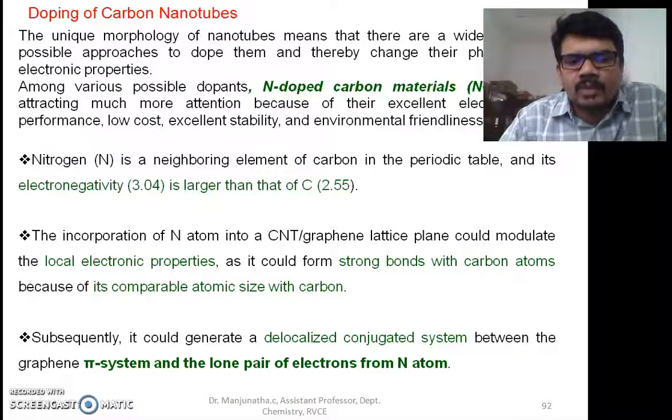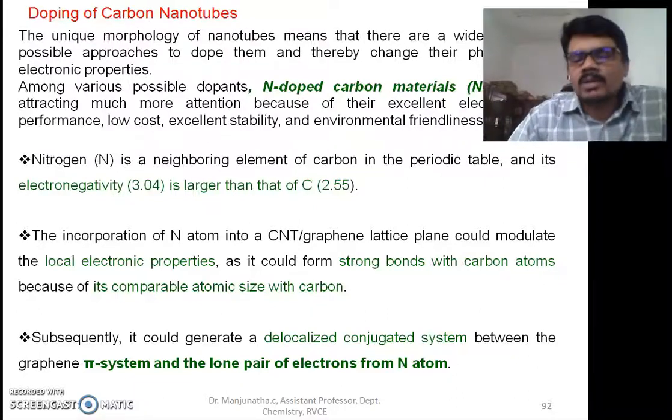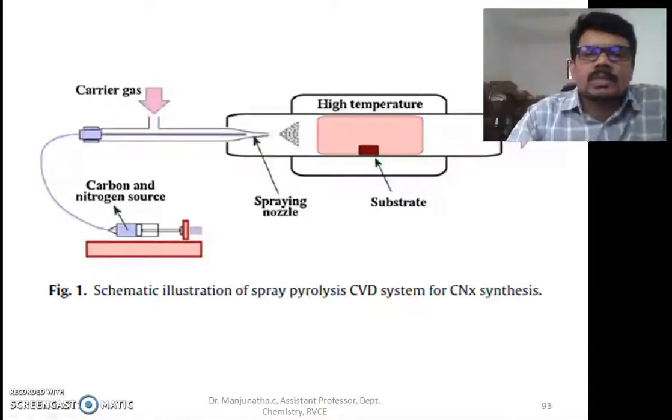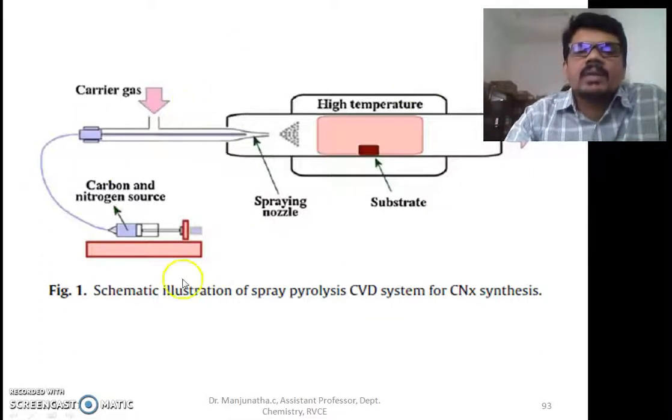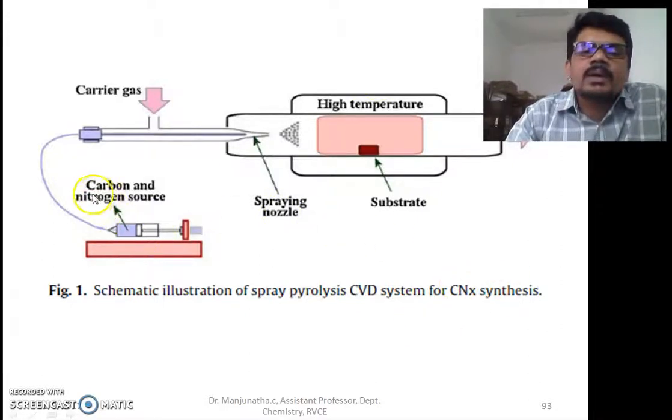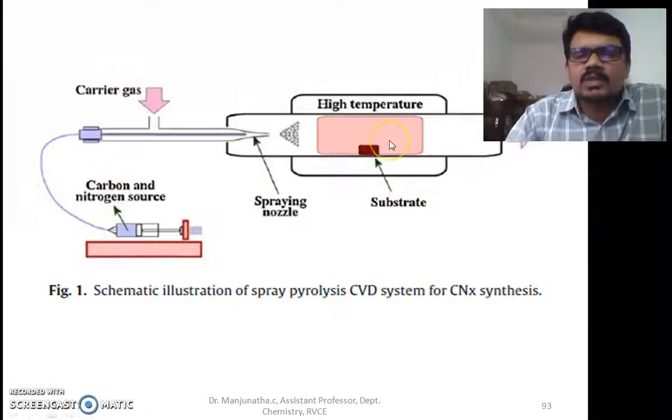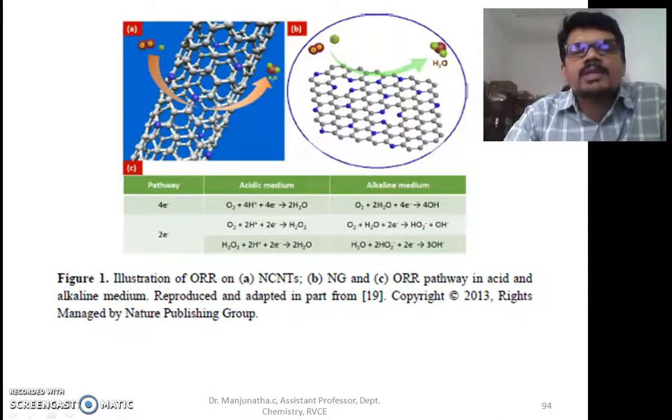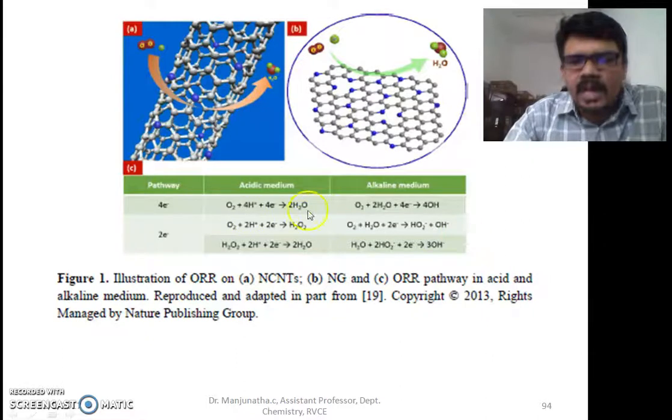It can generate a delocalized conjugated system between the carbon nanotube or graphene pi system and the lone pair of electrons. Nitrogen uses three of its electrons for covalent bonding and two lone pair electrons for delocalization. This is the method we use, taking carbon and nitrogen sources. The other parts are the same as we discussed in CVD, using carbon source and nitrogen source along with in-situ metal.